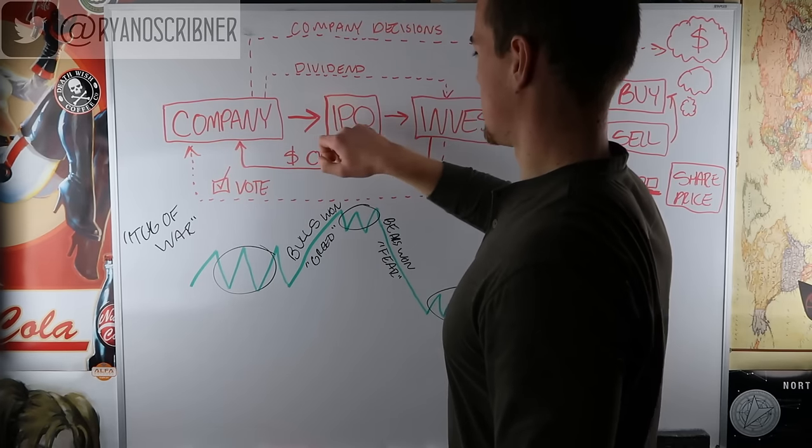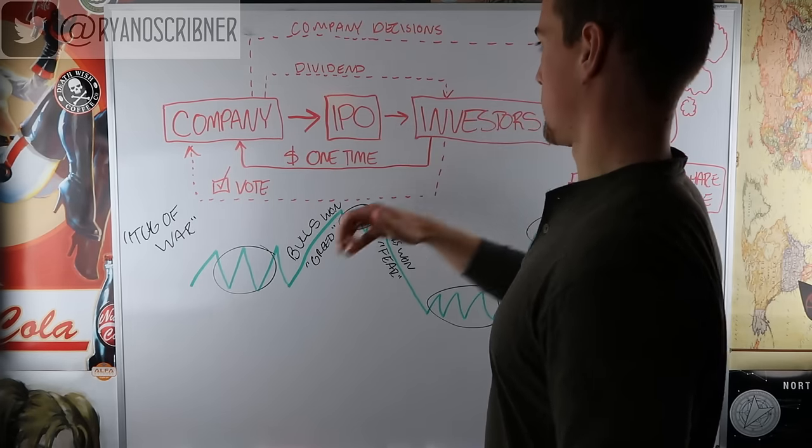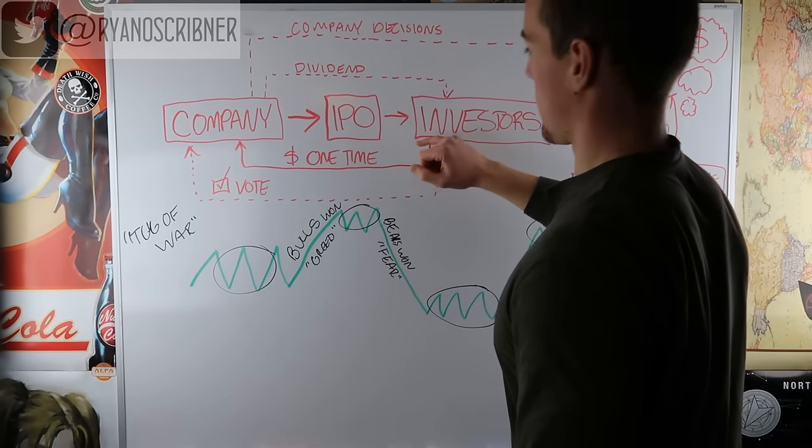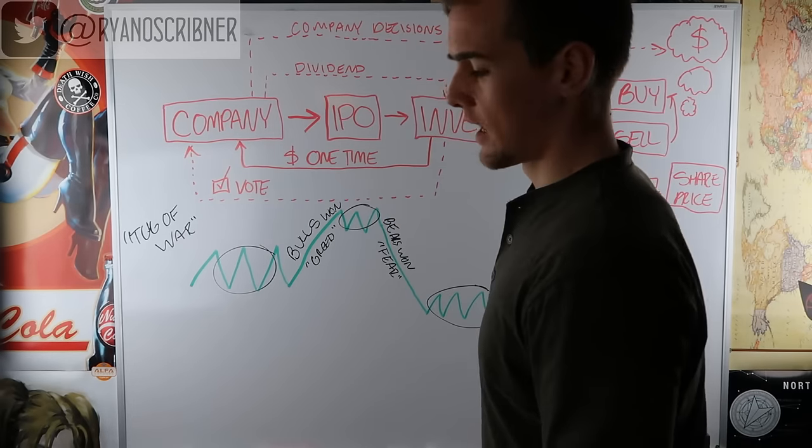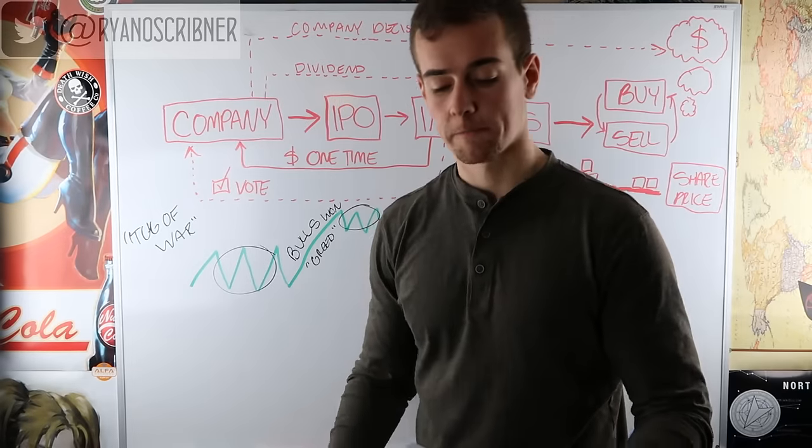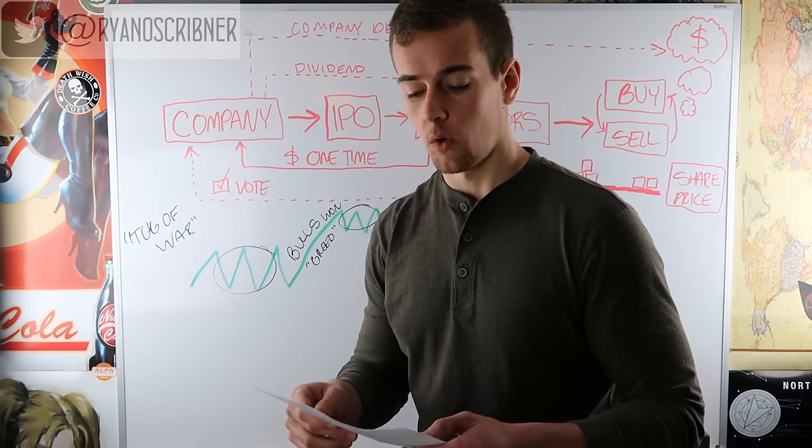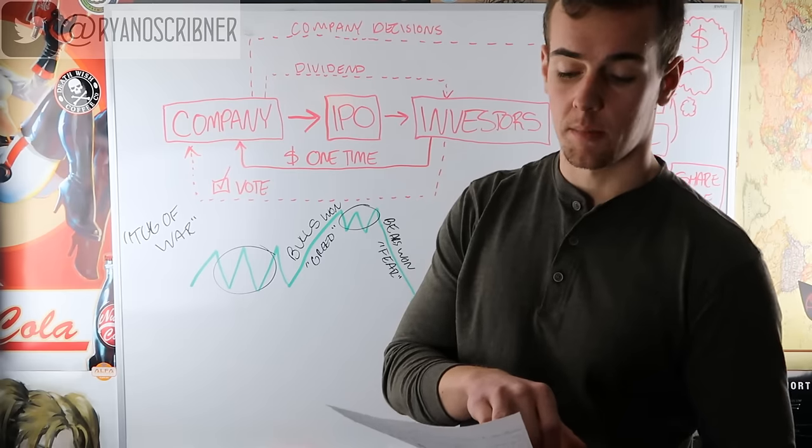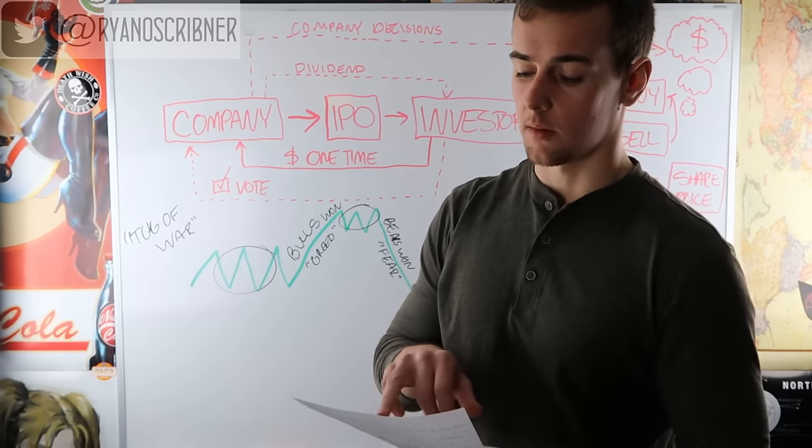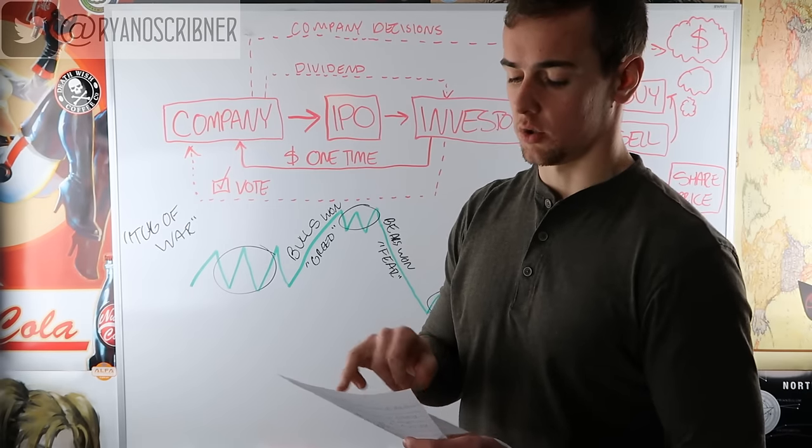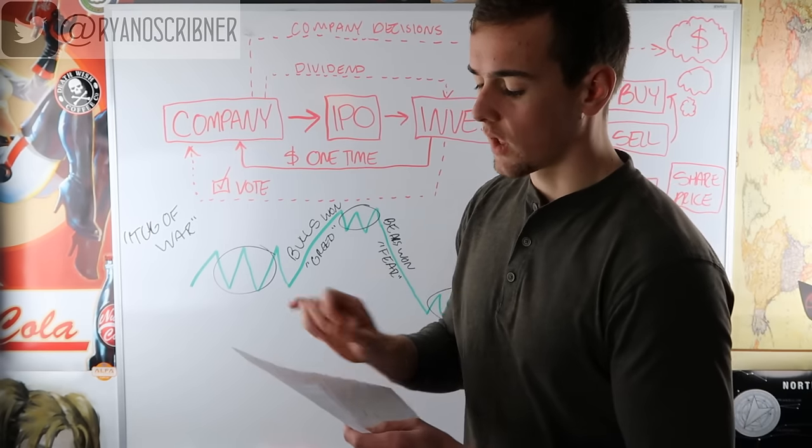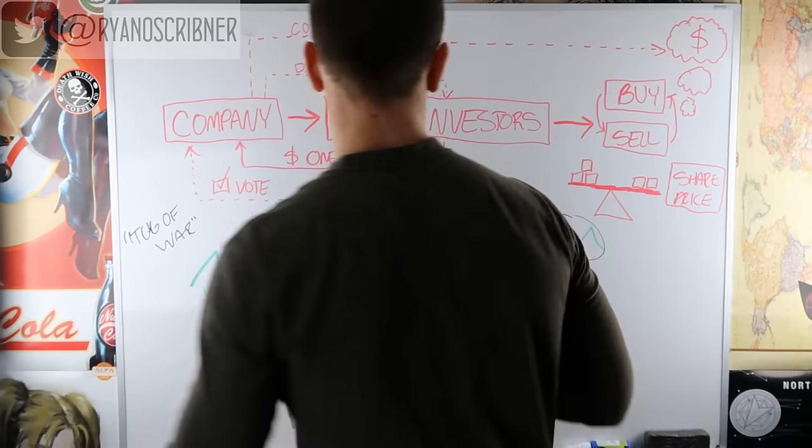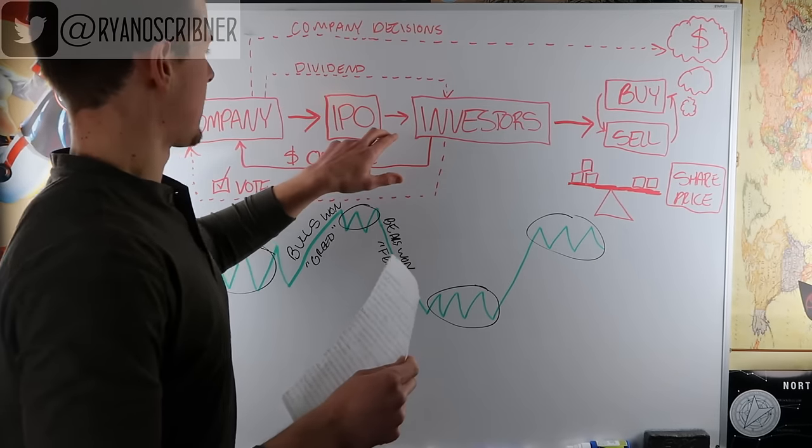So this is where the company does the IPO or a new offering of shares, sells it to investors, and they make their money one time and use that money to conduct business. The pricing during the IPO is determined by two key factors: number one being how much the company is estimated to be worth, and number two is the number of shares being issued. So what happens here is after they sell to the investors, the stock will continue to trade being bought and being sold on an exchange. An example of this would be the New York Stock Exchange.